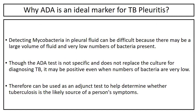ADA is an ideal marker for TB pleuritis because detecting mycobacteria in pleural fluid can be difficult — there may be a large volume of fluid with very low numbers of bacteria present. Though the ADA test is not specific and does not replace culture for diagnosing TB, it may be positive even when bacterial numbers are very low, and can be used as an adjunct test to help determine whether tuberculosis is the likely source of a person's symptoms.